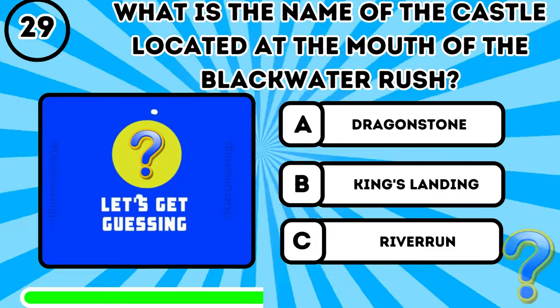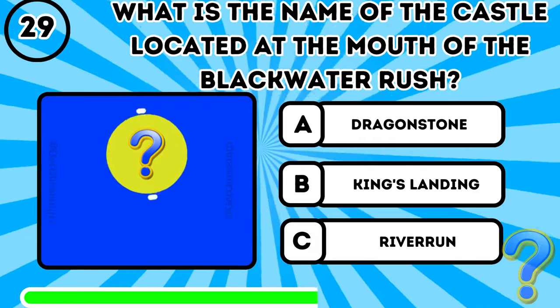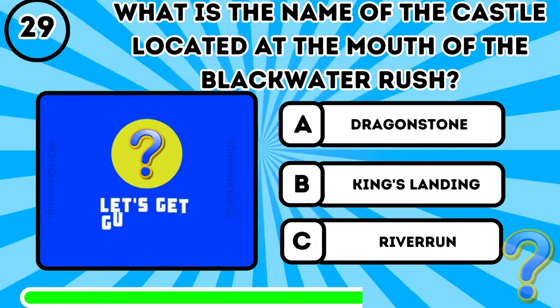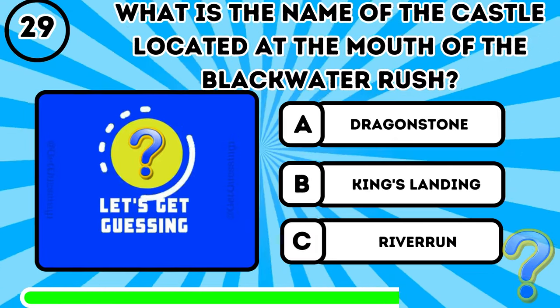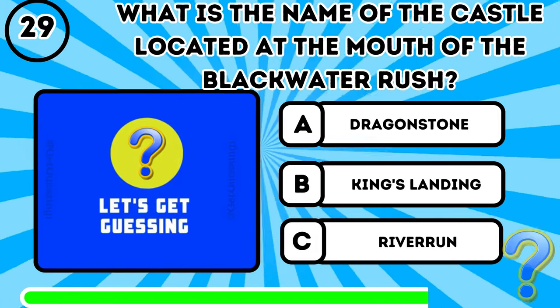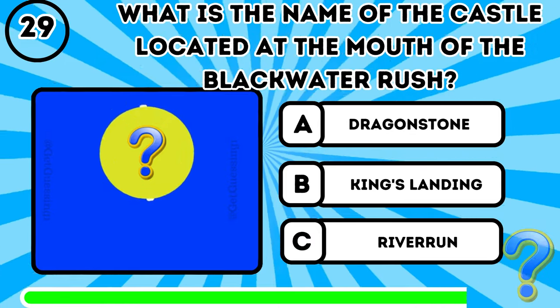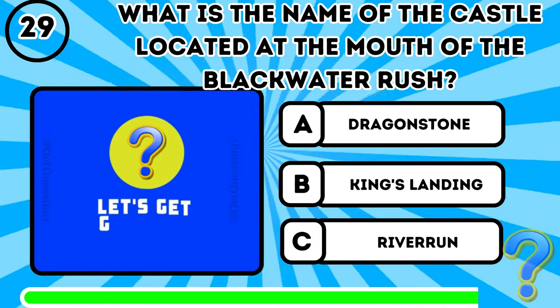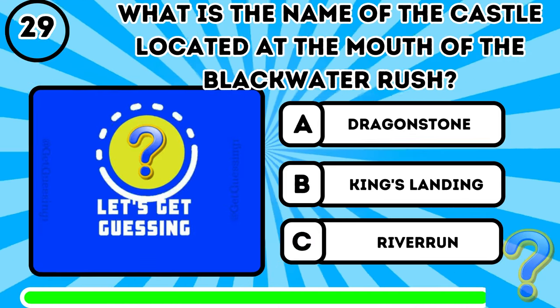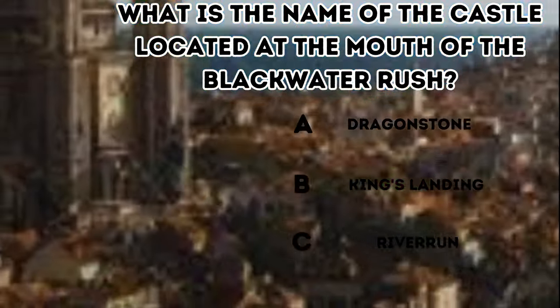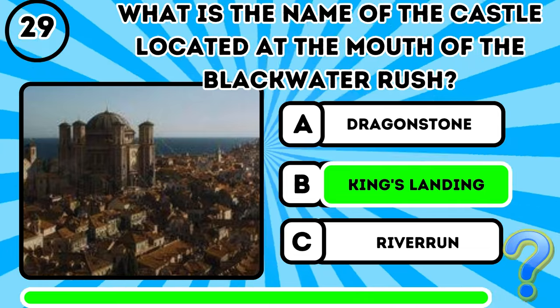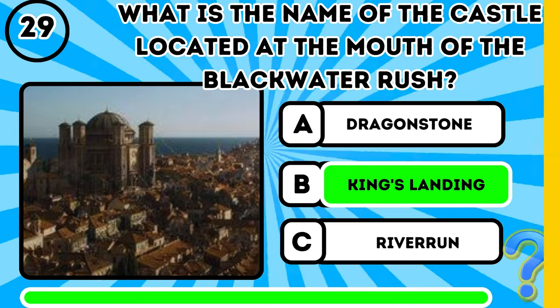Question 28: What is Stannis Baratheon's daughter's name? It's B, King's Landing.